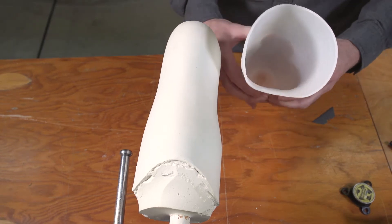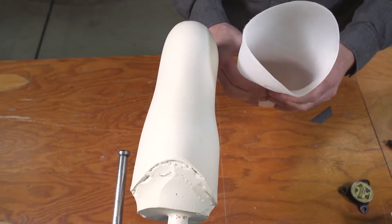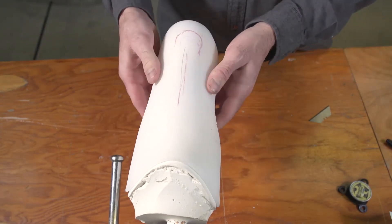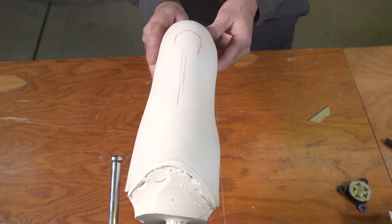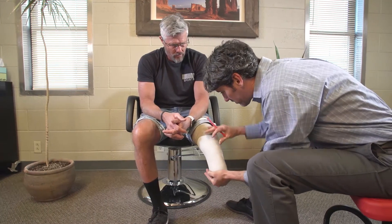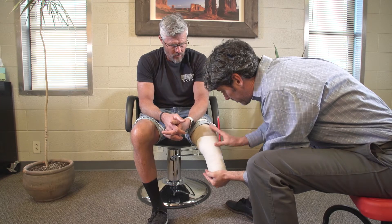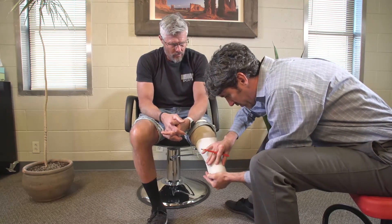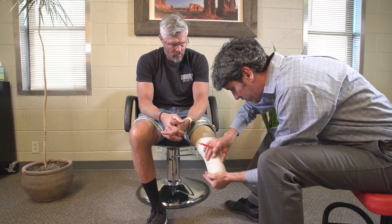One thing to keep in mind, the RevoFit system works best with a flexible insert. The insert helps distribute pressure evenly throughout the socket, and prevents acute pressure around the movable panels. We recommend that you make the flexible insert in the check socket phase, and use it for both the check socket and the definitive socket.